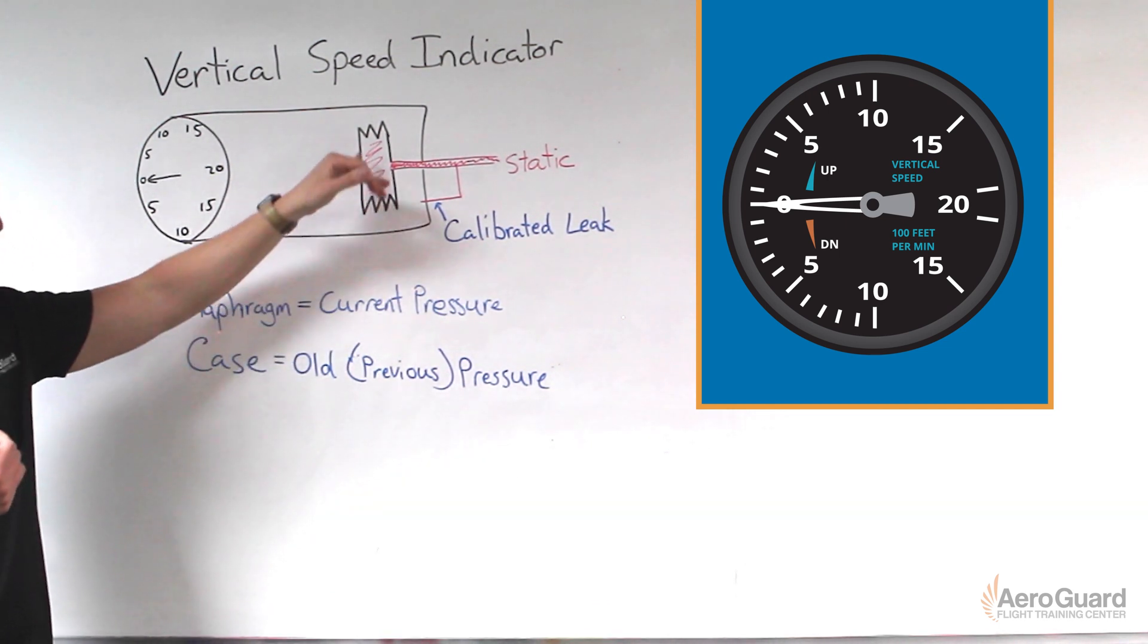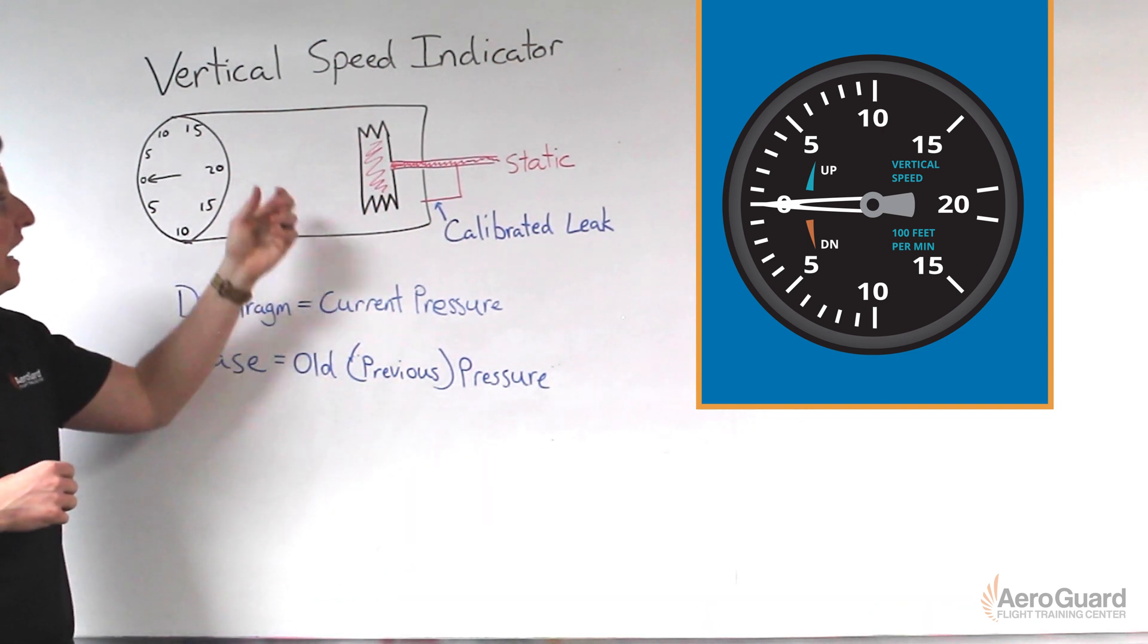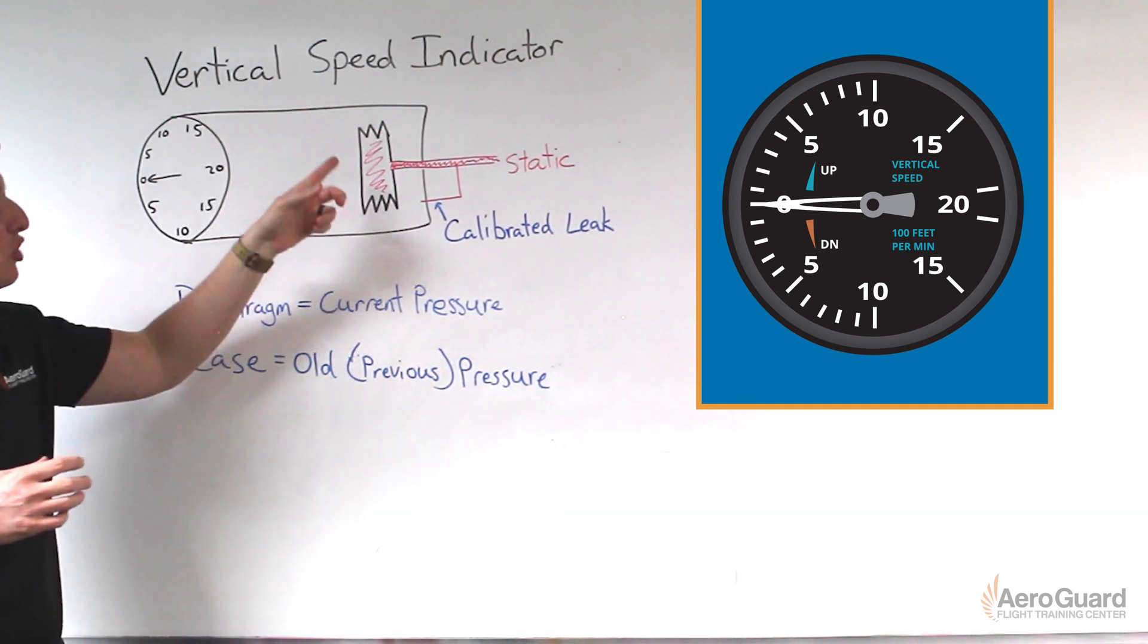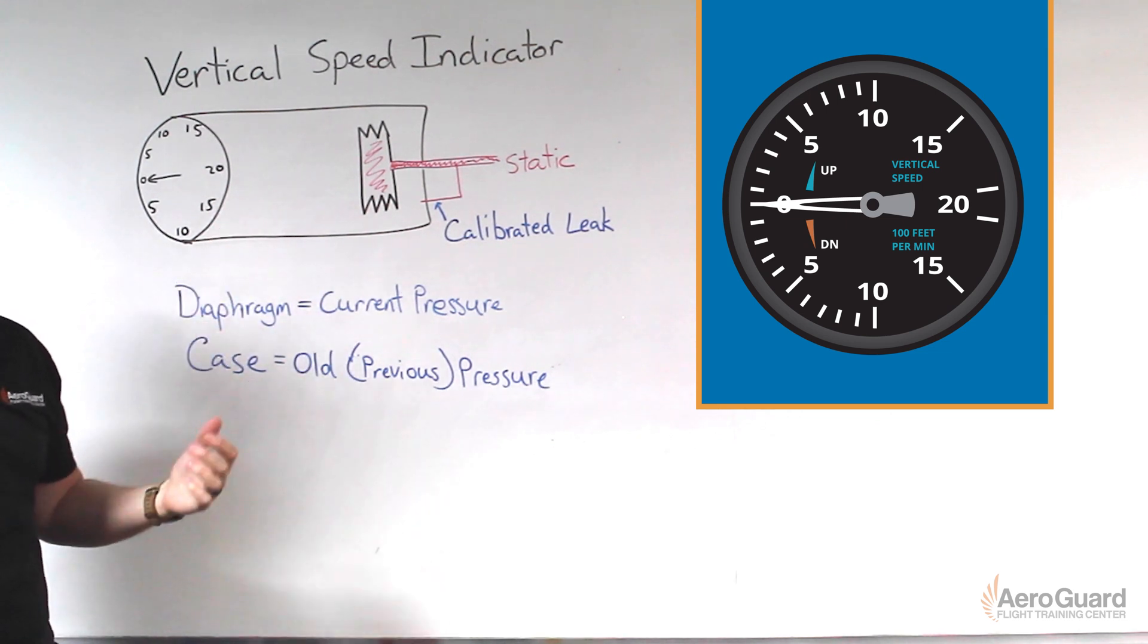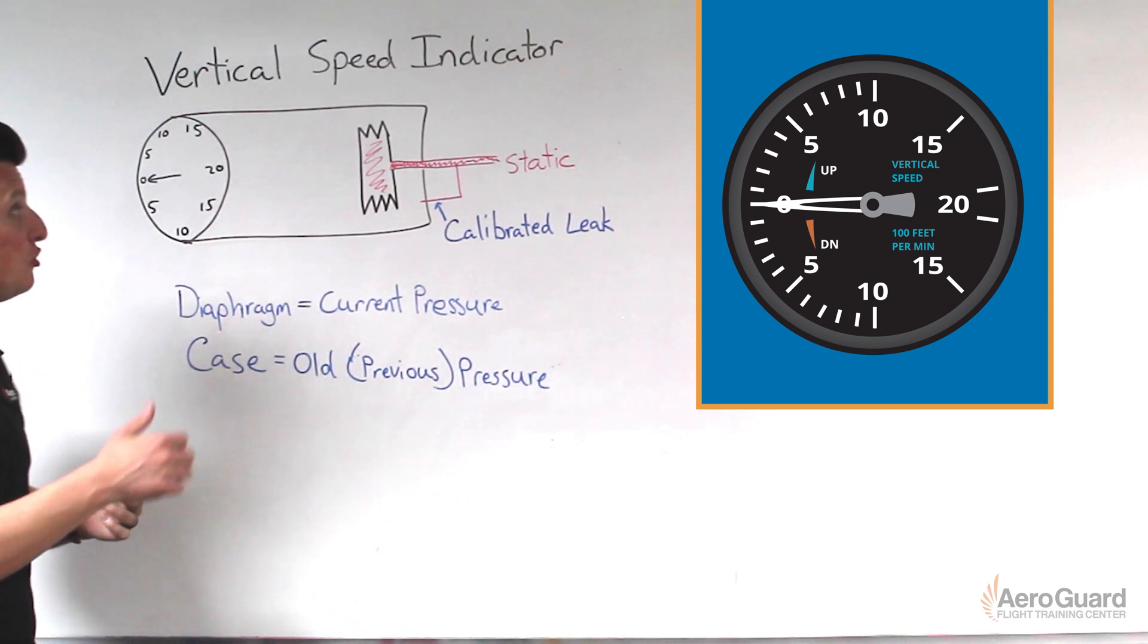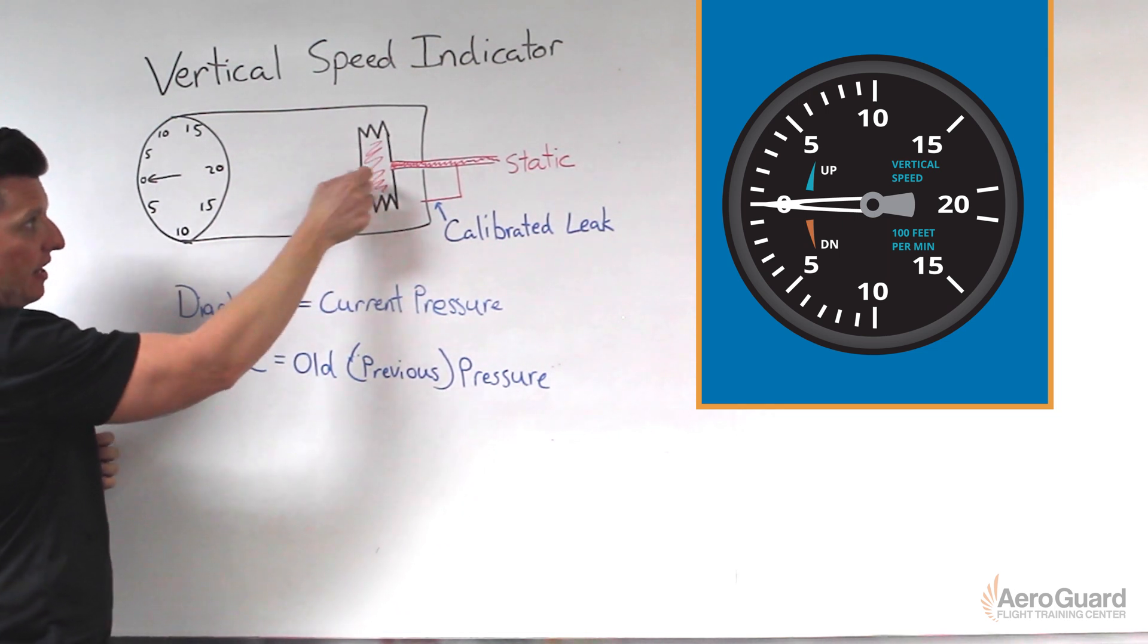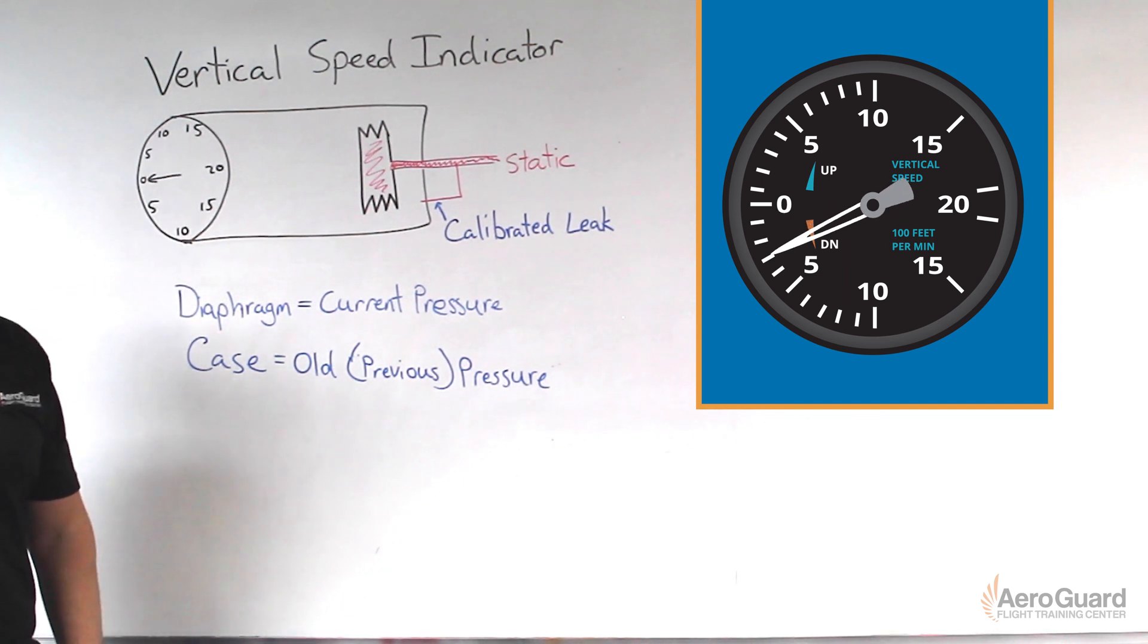If the pressure inside the diaphragm is relatively higher than the pressure outside of the diaphragm, what does that mean? It means our current pressure is greater than our old pressure, which means that we've descended. So in this case, if the pressure was greater in the diaphragm, it would expand, and if it expands, we know that this arm would move down.